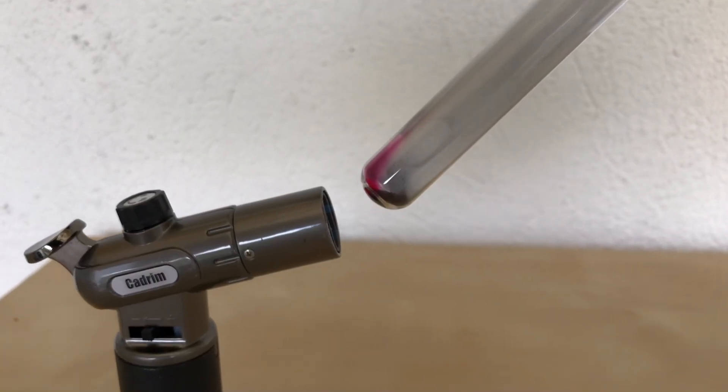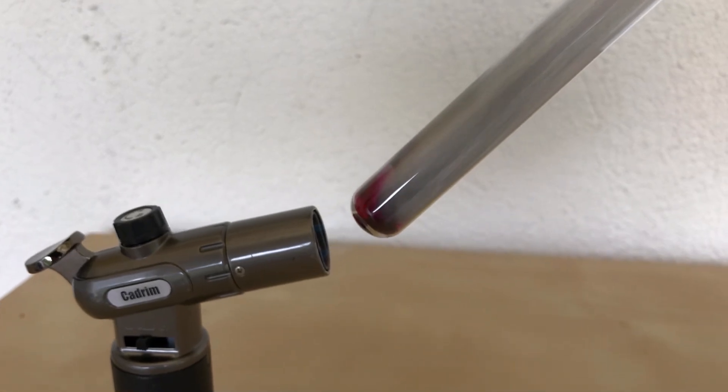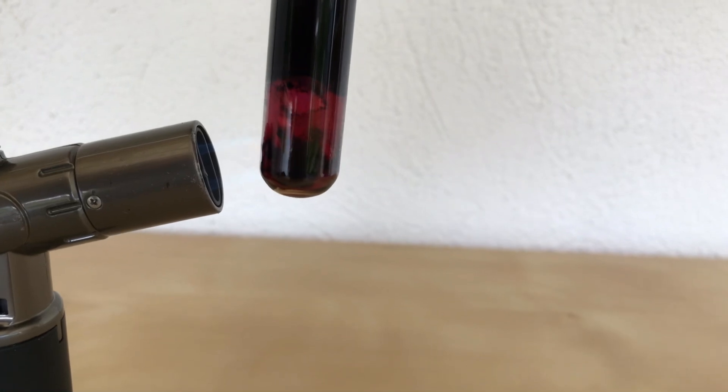When you look closely, you can see a hint of purple right here. Once the test tube was being heated up from a different angle, it became even more obvious. This reddish-purple vapor appeared.